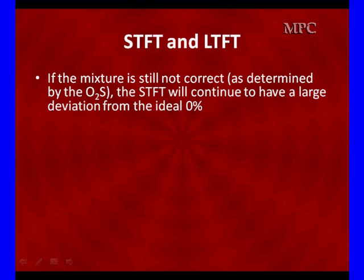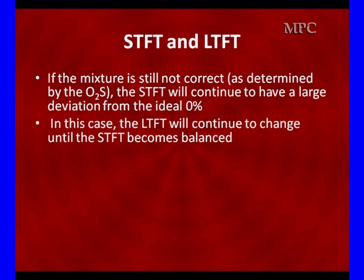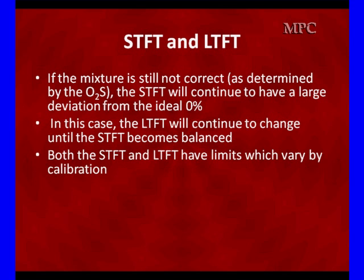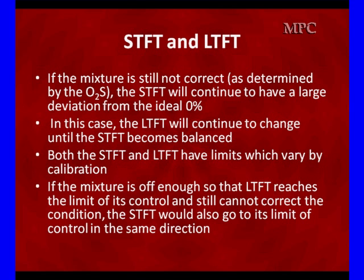If the mixture is still not correct as determined by the O2 sensor, the short-term will continue to have large deviations from the ideal 0. Long-term will continue to change until it becomes balanced. Both short-term and long-term have limits that vary by calibration, but it's somewhere around 25-30% in most cases. If the mixture is off enough that long-term reaches the limit of control and cannot correct the condition, short-term would also have to go to its limits in the same direction, and they would be out of fuel control.